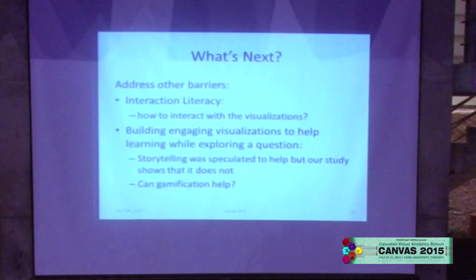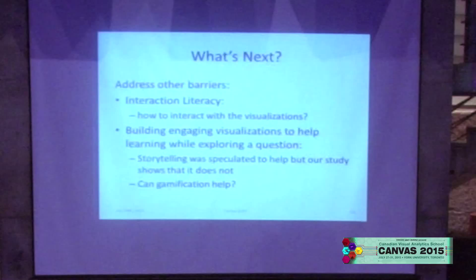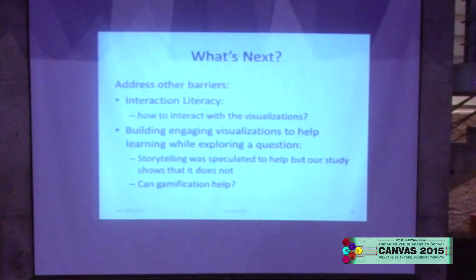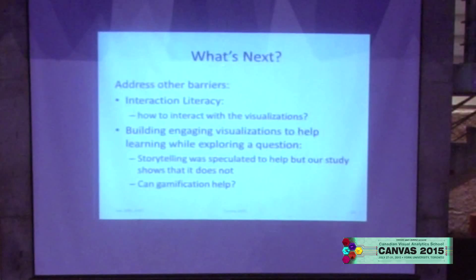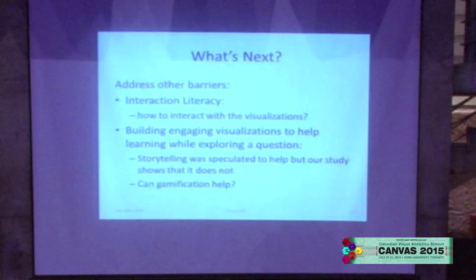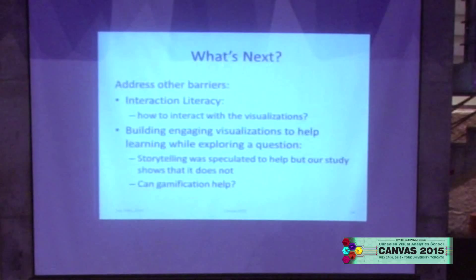My takeaway message is: even if you're working for companies asking you to use only the four types of visualization, you're dragging down the capability of humans to understand visualization. Use those four congruent types because they are very easy to understand and people can immediately make sense of what they show, but also add other visualizations that are more effective and efficient, and find ways for people to learn how to use those more efficient ones. That's really the way to go, instead of dragging people down to using the very simple ones.